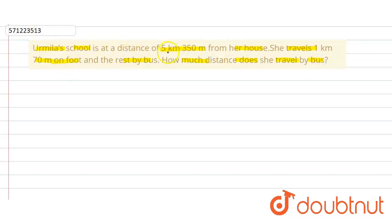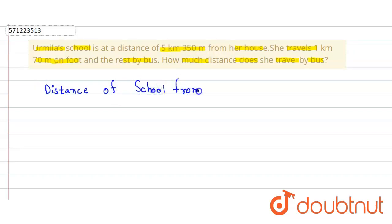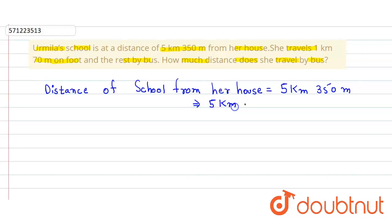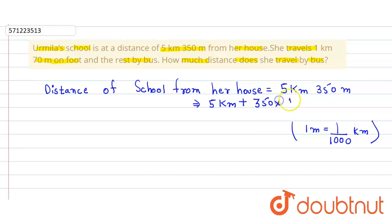It is given that the distance of Urmila's school from her house is 5 km and 350 meters. So we convert it into kilometers using the conversion: 1 meter equals 1 divided by 1000 km. So that will be 5 km plus 350 into 1/1000 km, which equals 5.350 km.